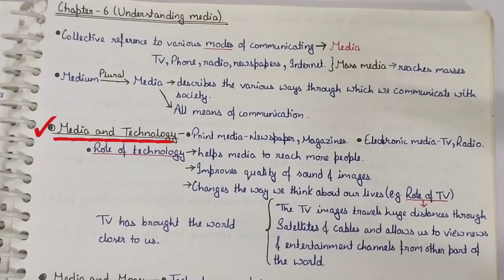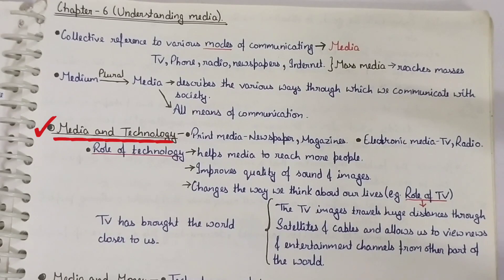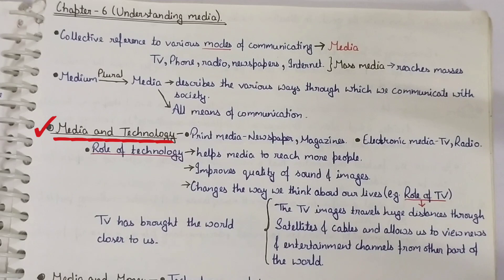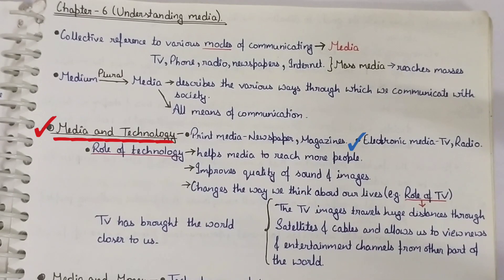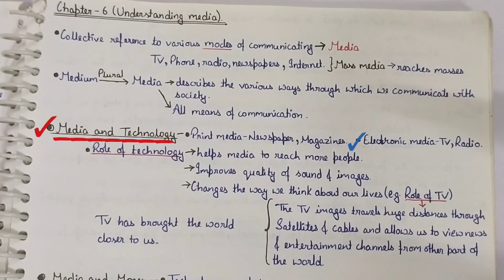Now we will look at the relation between media and technology. First is print media — newspapers and magazines come under print media. Next is electronic media — TV and radios come under electronic media.